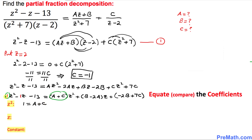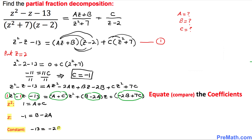Equating z coefficients: negative 1 equals b minus 2a. And equating the constant terms: negative 13 equals negative 2b plus 7c.